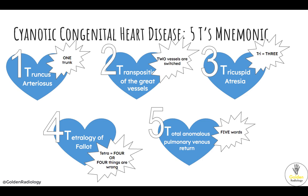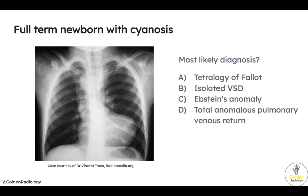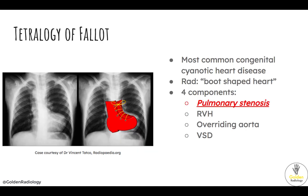In this video, we'll talk about two of the T's because they have classic appearances on imaging. Let's start with a question: full-term newborn with cyanosis — most likely diagnosis? Tetralogy of Fallot, isolated VSD, Ebstein's anomaly, or total anomalous pulmonary venous return? The answer is Tetralogy of Fallot.